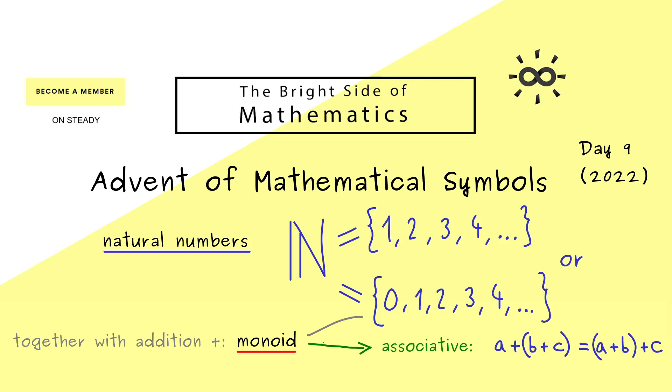This is the first part we have for a so-called monoid. The second part is that a neutral element exists. Often it's also called the identity element, and it just means that it does not change the element in the addition.